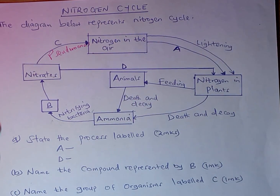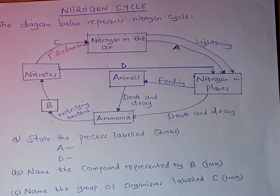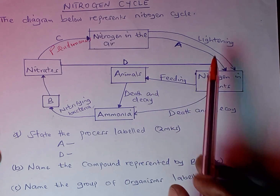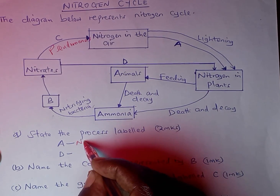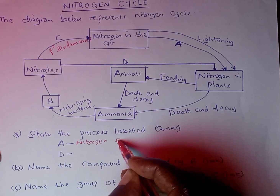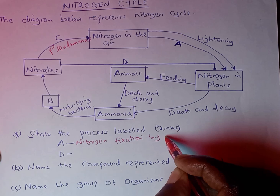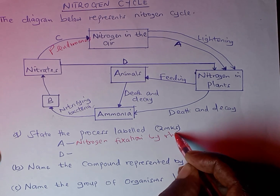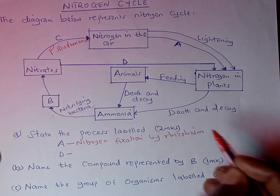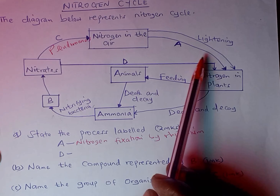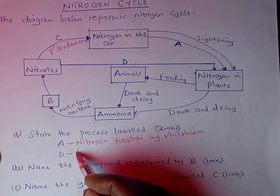We can now go through the questions. The first question: state the processes labeled A and D. Process A is nitrogen fixation — nitrogen fixation by nitrifying bacteria, for example Rhizobium bacteria. Process B is from nitrates in the soil to plants, and this occurs through absorption.